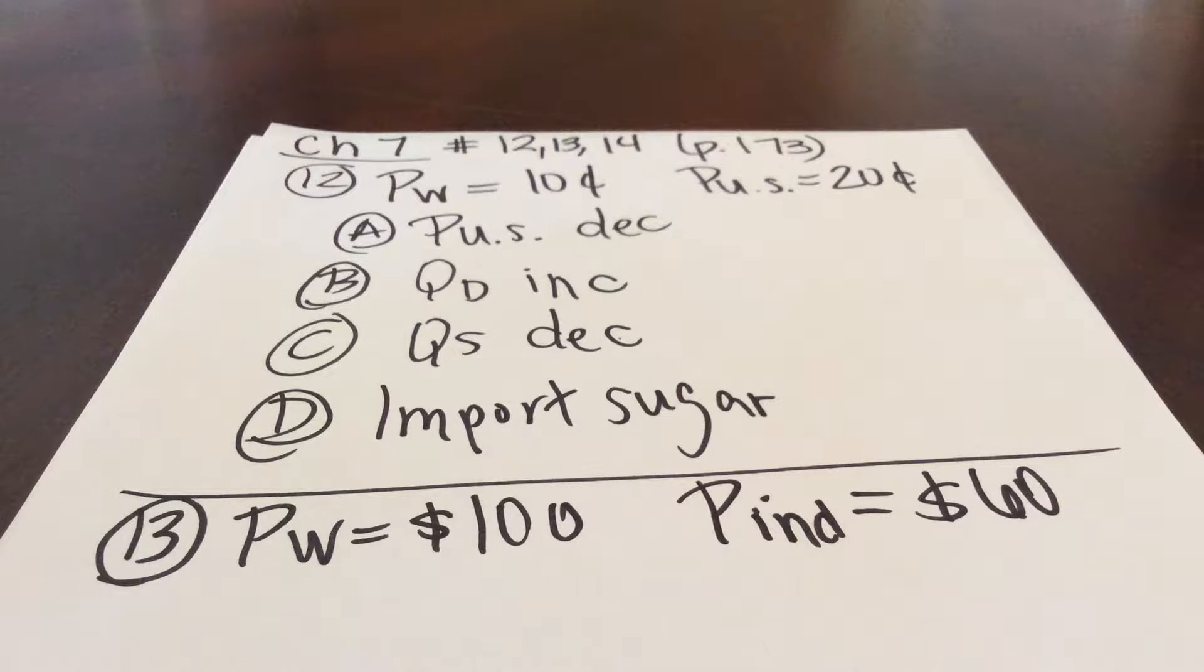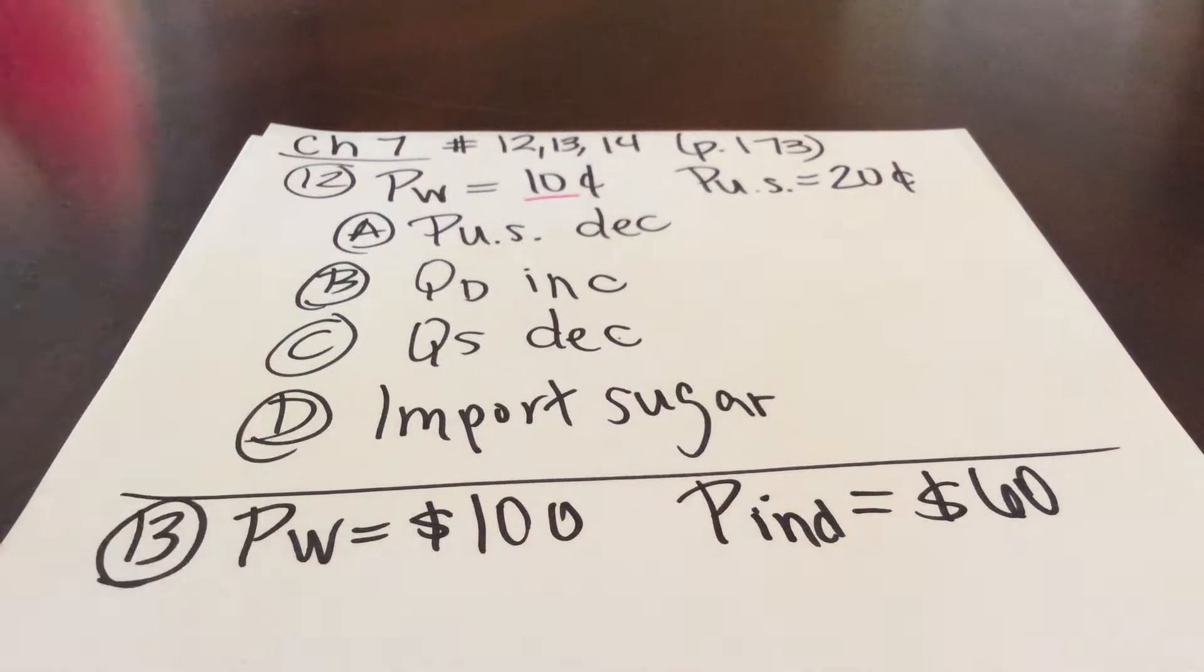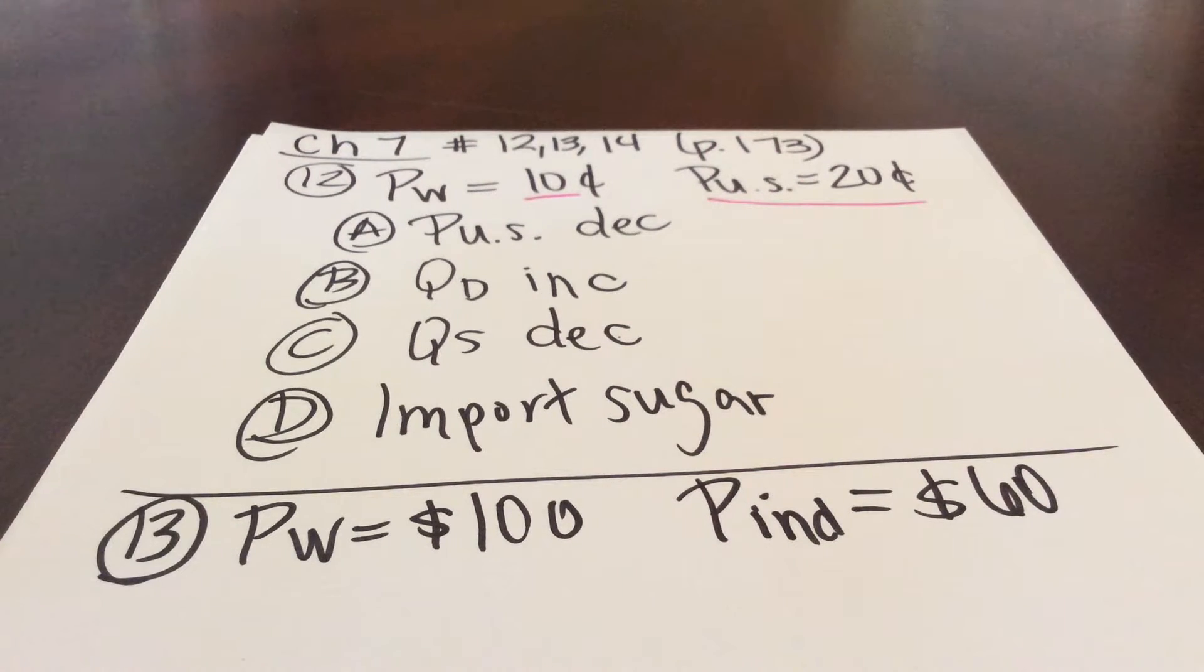Question 12. Suppose that the world price of sugar is 10 cents a pound, so our world price is 10 cents, but that the U.S. does not trade internationally, and the equilibrium price of sugar in the United States is 20 cents, so we have a higher price in the U.S. What then happens when the U.S. begins to trade internationally? Question A. How does the price of sugar in the U.S. change? Well, the price is going to fall.